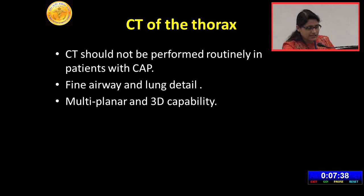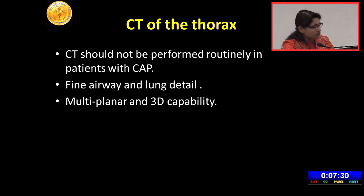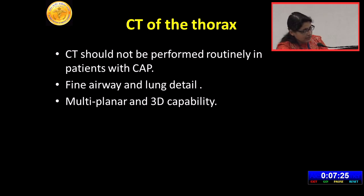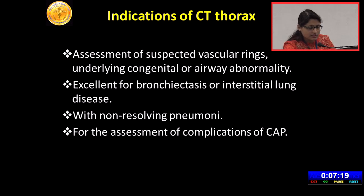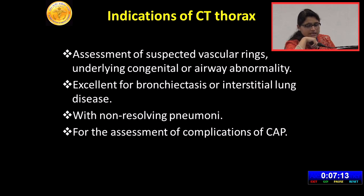CT is not a routine investigation in community-acquired pneumonia. Its advantages include fine airway and lung detail and multi-planar and 3D capability unlike a 2D radiograph. CT is indicated when suspecting a vascular ring or underlying congenital or airway abnormality in a case with persistent or recurrent pneumonia, for which CT angiography should be done.